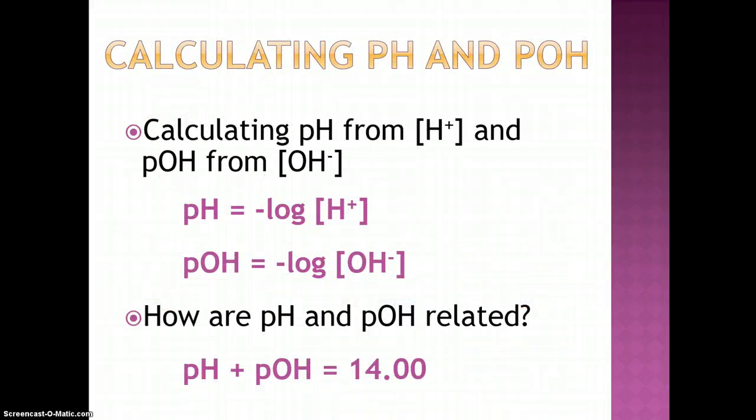We have certain mathematical relationships between pH, pOH, and the ion concentration. We can calculate both pH and pOH using the negative log of the ion concentration. The two items are related by the fact that by adding the pH and the pOH together, it is always equal to 14.